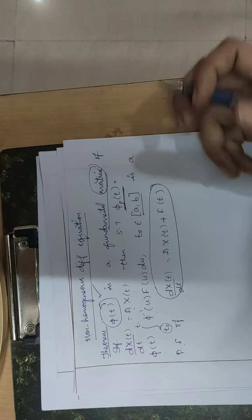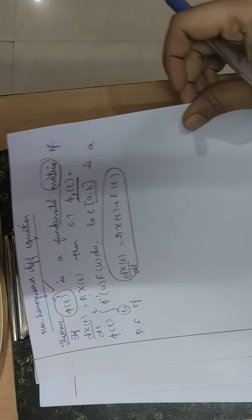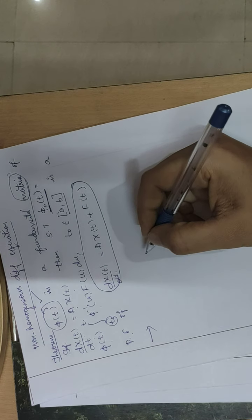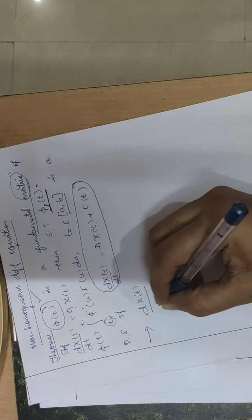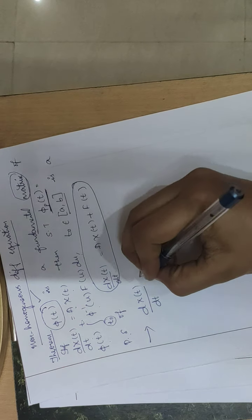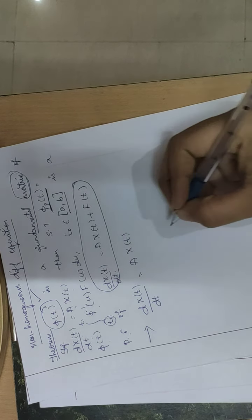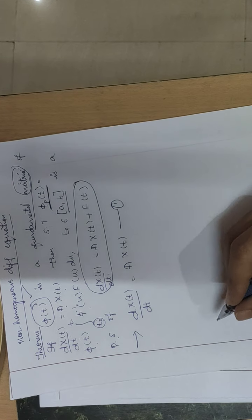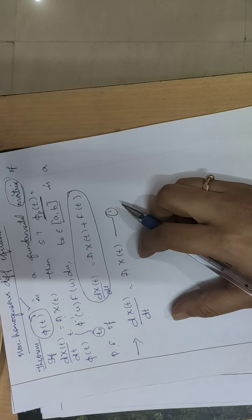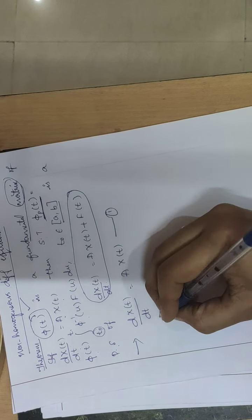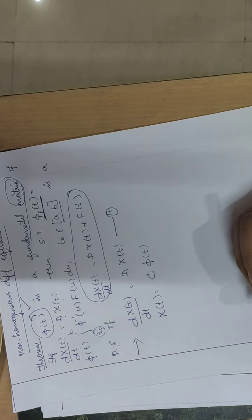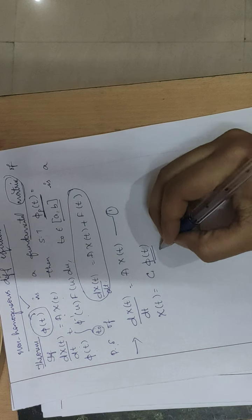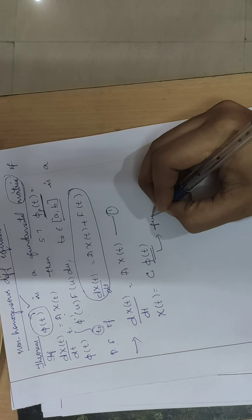First let us try to prove this theorem, then we will solve problems on it. To prove this theorem, I will consider the homogeneous differential equation dx/dt = A·x(t), call this equation number one. If you solve this, the general solution will be x(t) = c·phi(t), where phi(t) is the fundamental matrix. Call this equation number two.